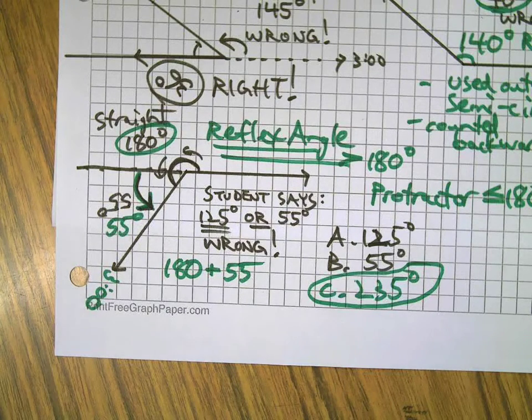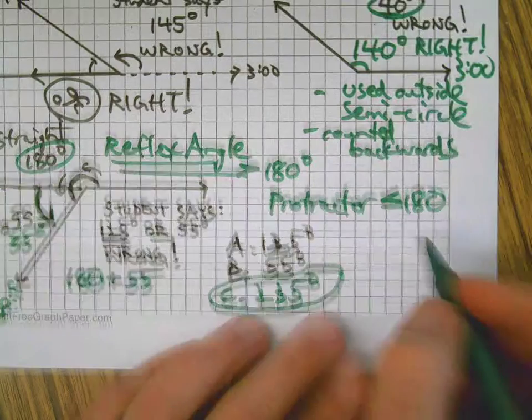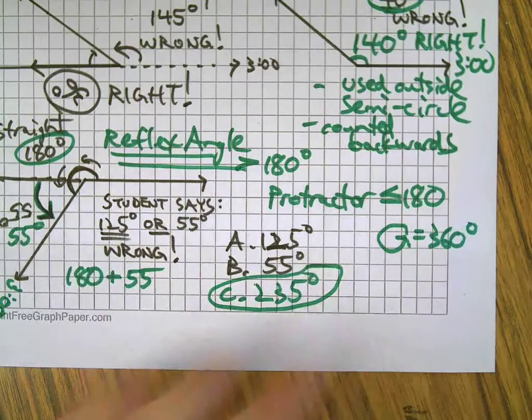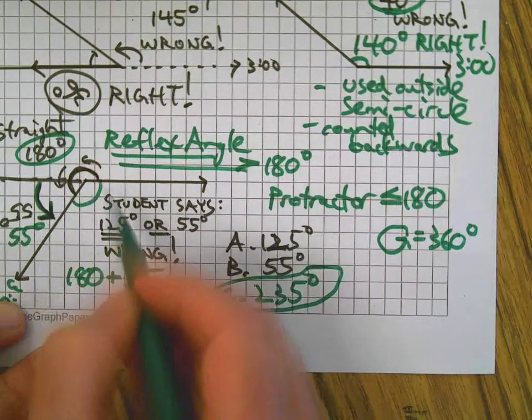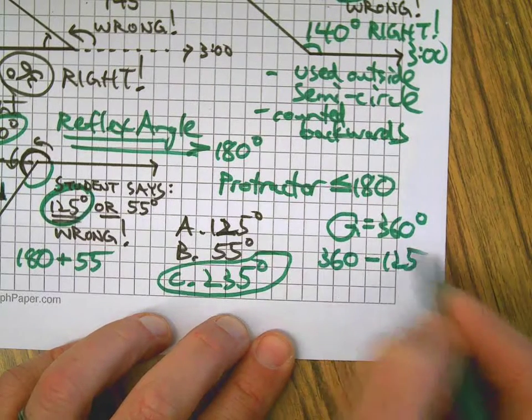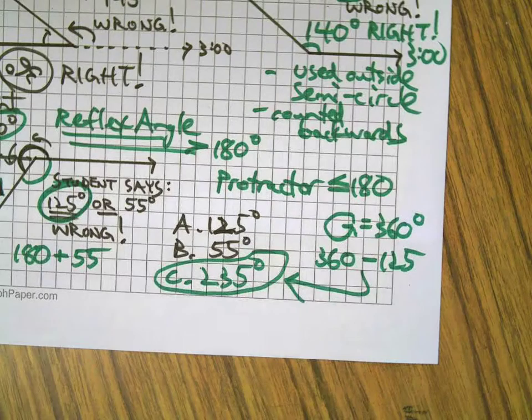Another way you could do this: you know a full circle equals 360, right? So we could take this measurement which is 125. You could go 360 take away 125, and guess what you'd get - yes, 235.